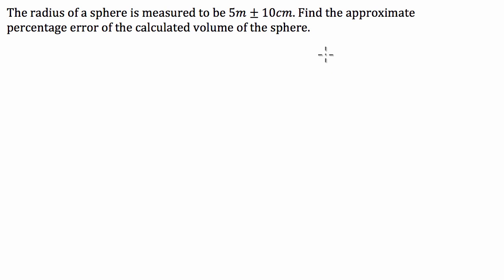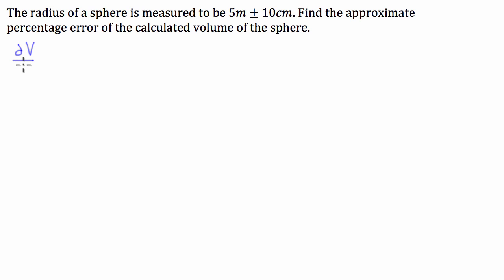The calculated volume of the sphere we're going to denote V, and the percentage error as a decimal of the calculated volume is going to be denoted as ΔV over V. If you wanted that as a percentage you would just multiply it by 100. So that's what we're looking for as a value in the end, and we'll put that to the side.